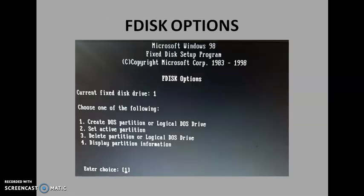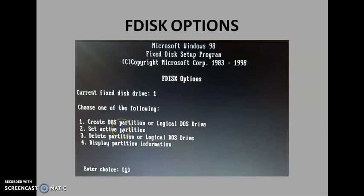Once you enter inside the FDISK options, it will show you four options. These are called FDISK options. First one is to create partition. Second is to set active partition. Third one is to delete partition, and fourth one is to display partition. So let's start with how to create a partition.